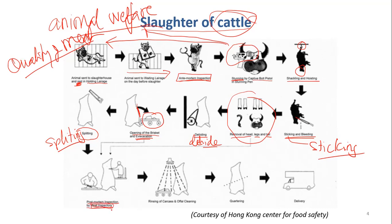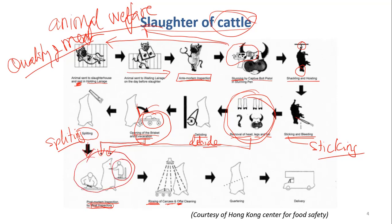Post-mortem inspection is carried out by meat inspectors — veterinary doctors — not by just anybody. Then rinsing of the carcasses and offals. The internal organs and the carcasses go together at the same speed along the line, so the meat inspectors can check the carcasses, the internal organs, and all offals together for one animal. Then quartering — 'quarter' means one-fourth, so quartering is to cut one carcass into four main parts, called primal cuts, to have four quarters. Then storage and delivery.